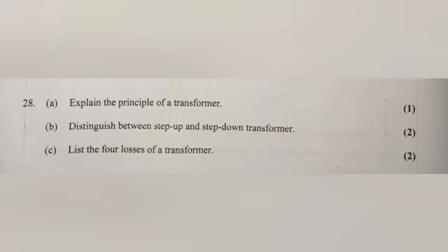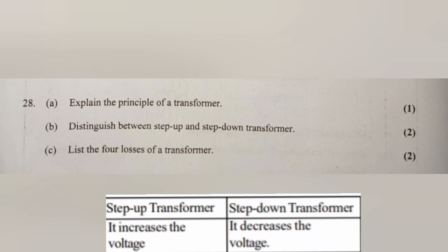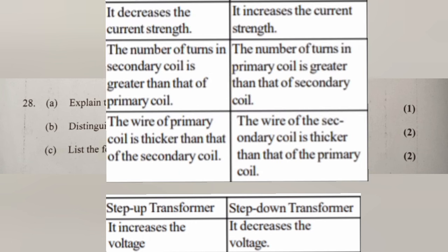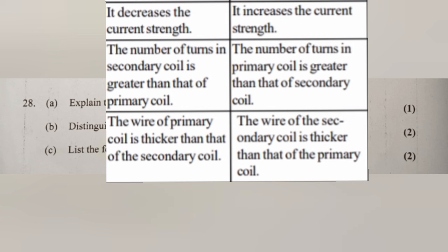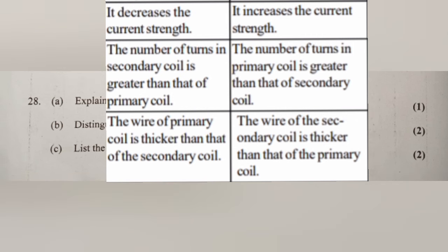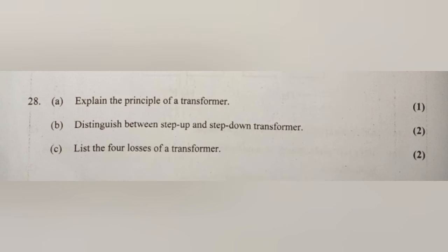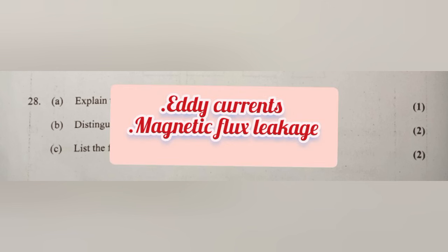Q28a: The principle of a transformer is mutual inductance. Q28b: A step-up transformer increases voltage and decreases current; a step-down transformer decreases voltage and increases current. In a step-up transformer, the secondary coil has more turns than the primary; in a step-down transformer, the primary has more turns. Q28c: The four losses of a transformer are eddy currents, magnetic flux leakage, hysteresis loss, and resistance of the windings.